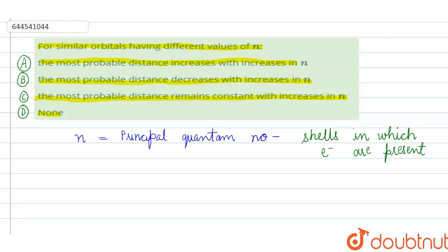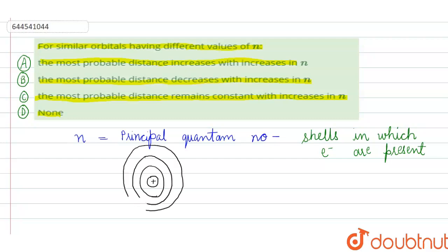So first of all, there is our nucleus and this is the shell. This is the nucleus; this is the K shell, L and M. So students, here the distance increases. Our n also increases — that is, the shell also increases — that is, nucleus with respect to K, nucleus with respect to L sub-shell, and nucleus with respect to M sub-shell. So distance increases with increase in principal quantum number, that is n.